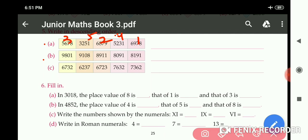Now B part. Again, five numbers are given: 9,801, 9,108, 8,911, 8,091, 8,191. The largest number is this, so it will come at first. Then second, then third, then number 4, and this is at last number 5.